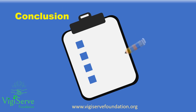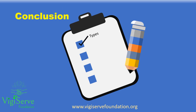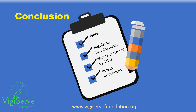What did we learn today? We started off by learning about the documents that are considered under the purview of pharmacovigilance system document. We then learnt about the regulatory requirements, followed by maintenance and update of the pharmacovigilance system document. Finally, we learnt about the role of this document in case of regulatory inspections.